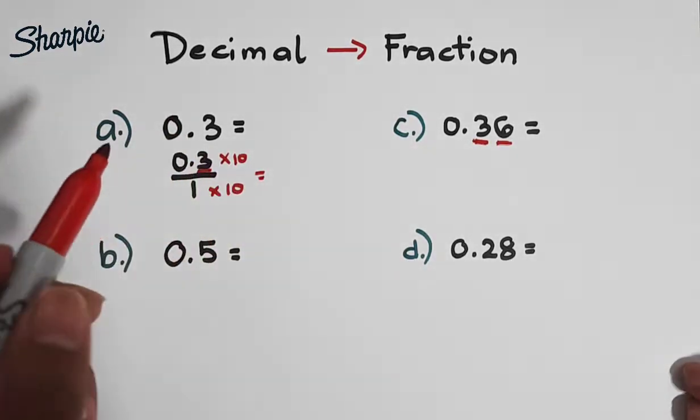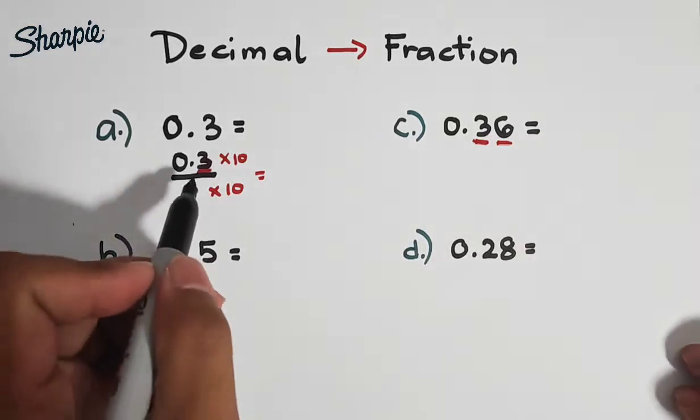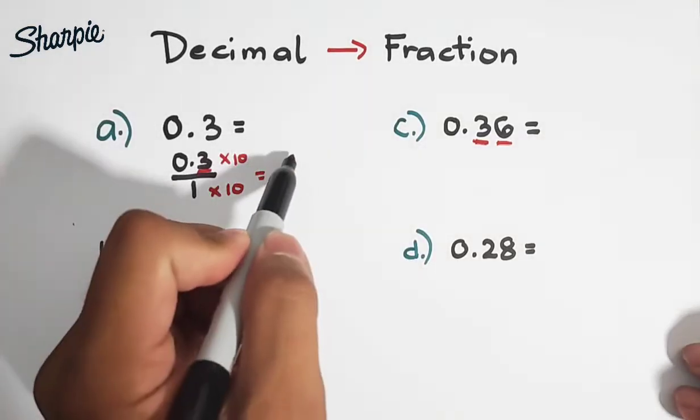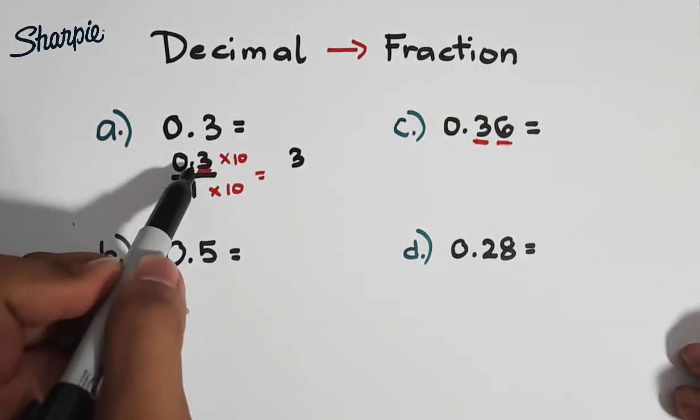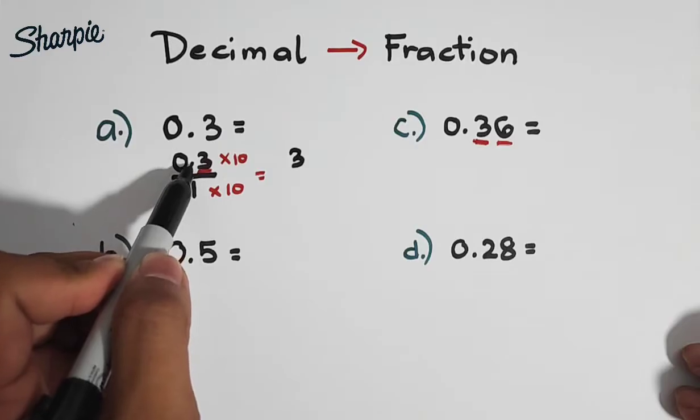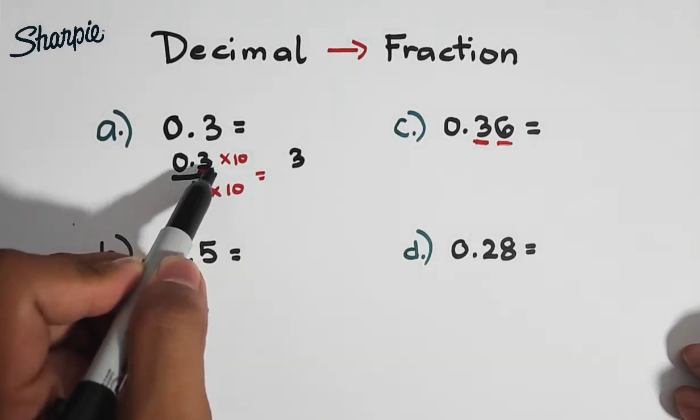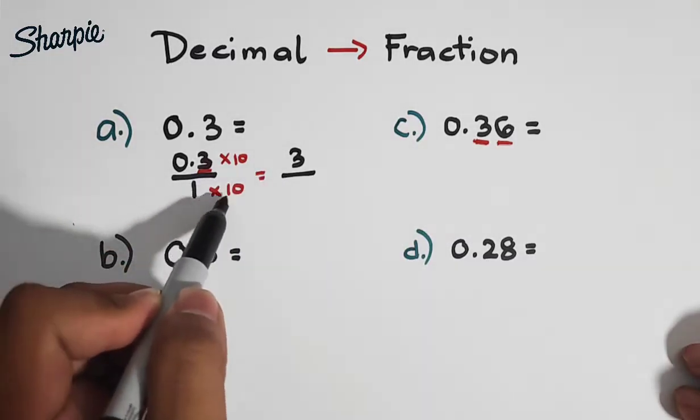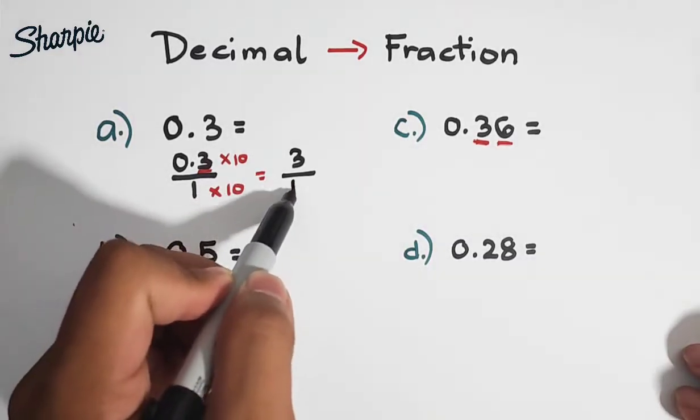So it will become equal to 0.3 times 10, that is equal to 3. Parang nangyari lang, mag-move ka lang ng 1 unit from left to right. Over 1 times 10, and that is equal to 10.